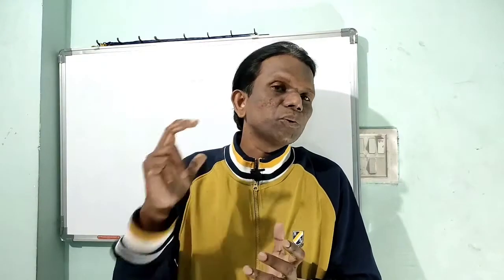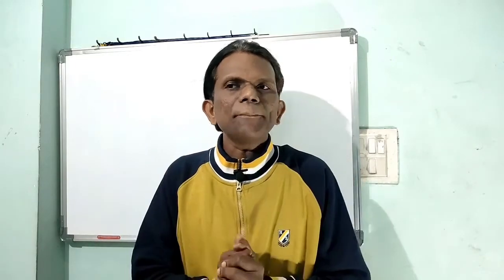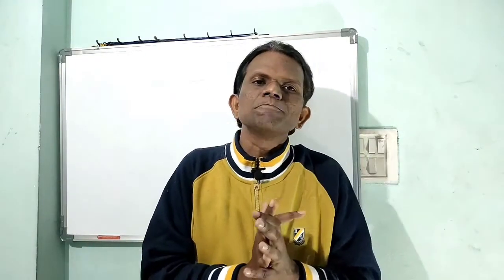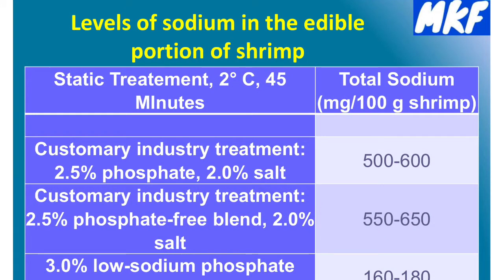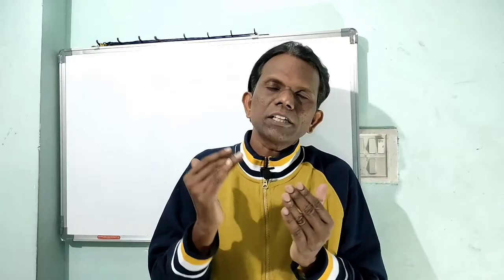The shrimp flesh naturally contains 250 to 350 milligrams of sodium per 100 grams of shrimp meat. During ice packing, the ice melts and the sodium content in shrimp meat starts leaching into the meltwater. The moisture content also increases. Once the shrimp reaches the factory, sodium levels can decrease from around 300 milligrams to as low as 100 milligrams per 100 grams of shrimp meat.